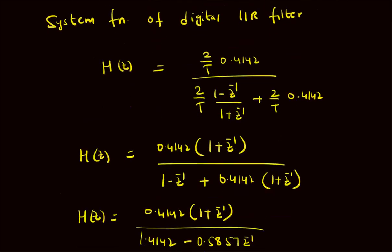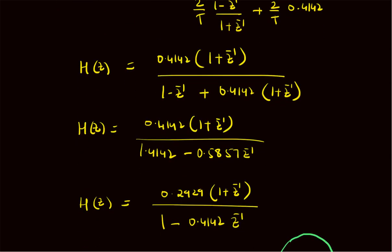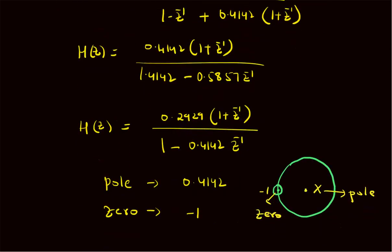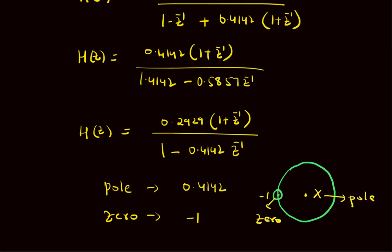The digital system function H(z) is computed by replacing ωc with (2/T) × tan(π/8) = 0.4142, substituting the bilinear transform for s, and performing simple algebra to normalize the denominator constant to 1. The result is H(z) = 0.2929 × (1 + z⁻¹) / (1 − 0.4142z⁻¹). The pole is at 0.4142 (= tan(π/8)) and the zero is at −1, both on the real axis in the z-plane.